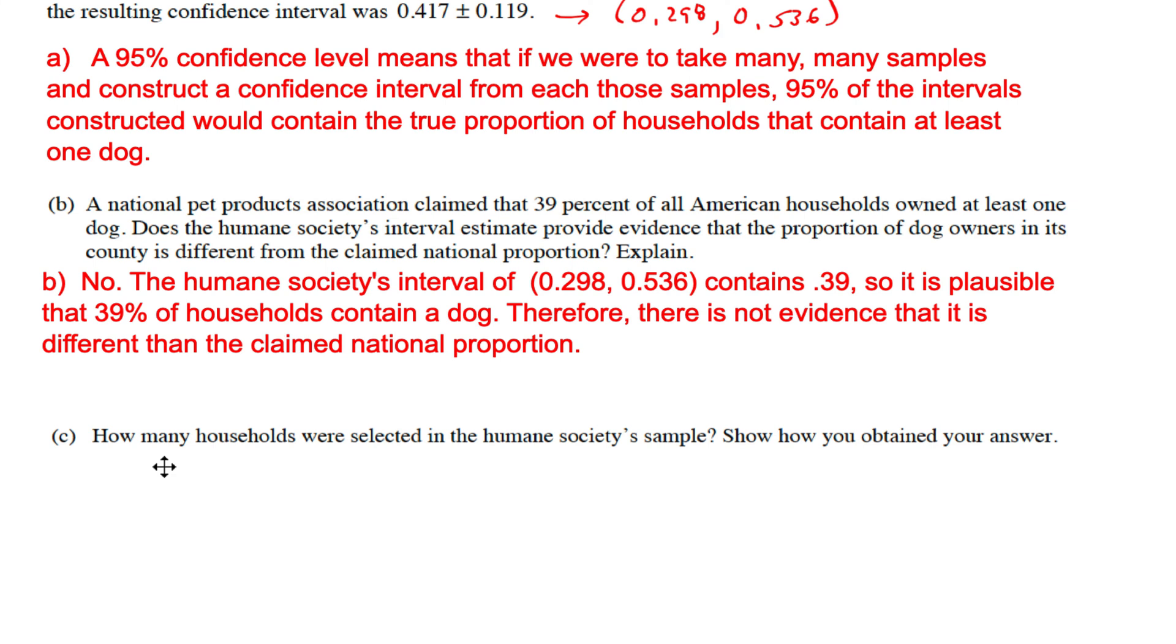Lastly, how many households, in other words you're going to be solving for n here. They tell you this is p-hat, and then plus or minus this is the margin of error. That's how confidence intervals work. We know that p-hat in this sample was 0.417. We know that the margin of error is 0.119. When we construct an interval, we take a sample, find the proportion p-hat, and add and subtract the margin of error.